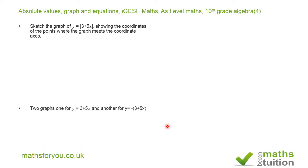To do this, I'm going to plot two straight line graphs. Looking at the equation y is equal to the absolute value of 3 plus 5x, I'm going to plot the graph of y is equal to 3 plus 5x.